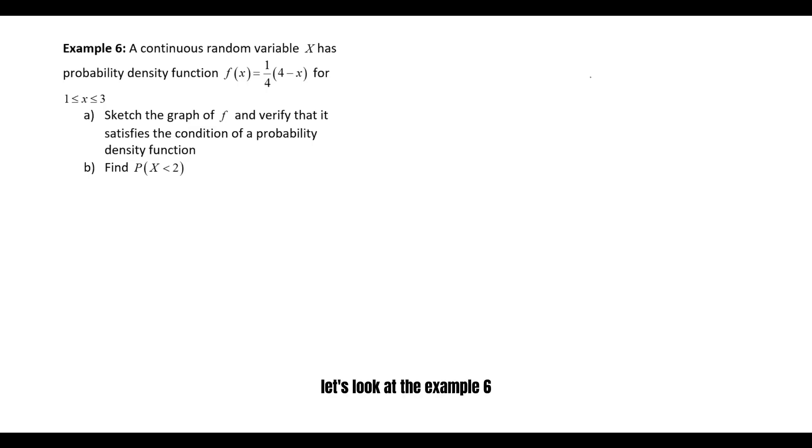Let's look at Example 6. A continuous random variable X has probability density function f(x) = (1/4)(4-x) for 1 ≤ x ≤ 3. Part a: sketch the graph of f and verify that it satisfies the condition of a probability density function. Part b: find the probability of X less than 2.